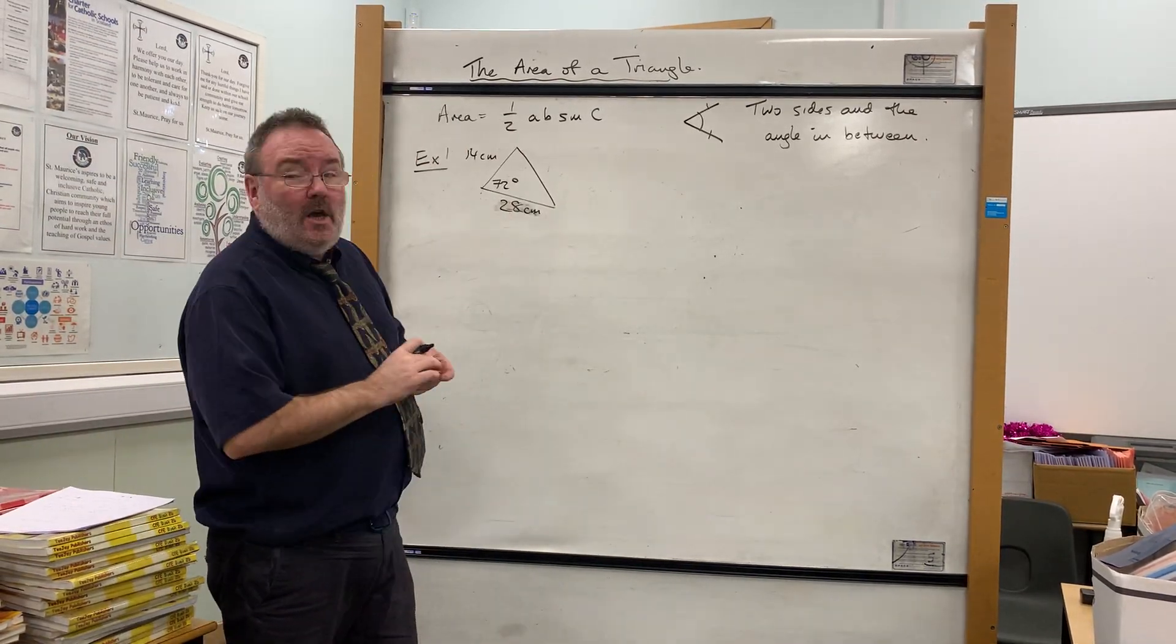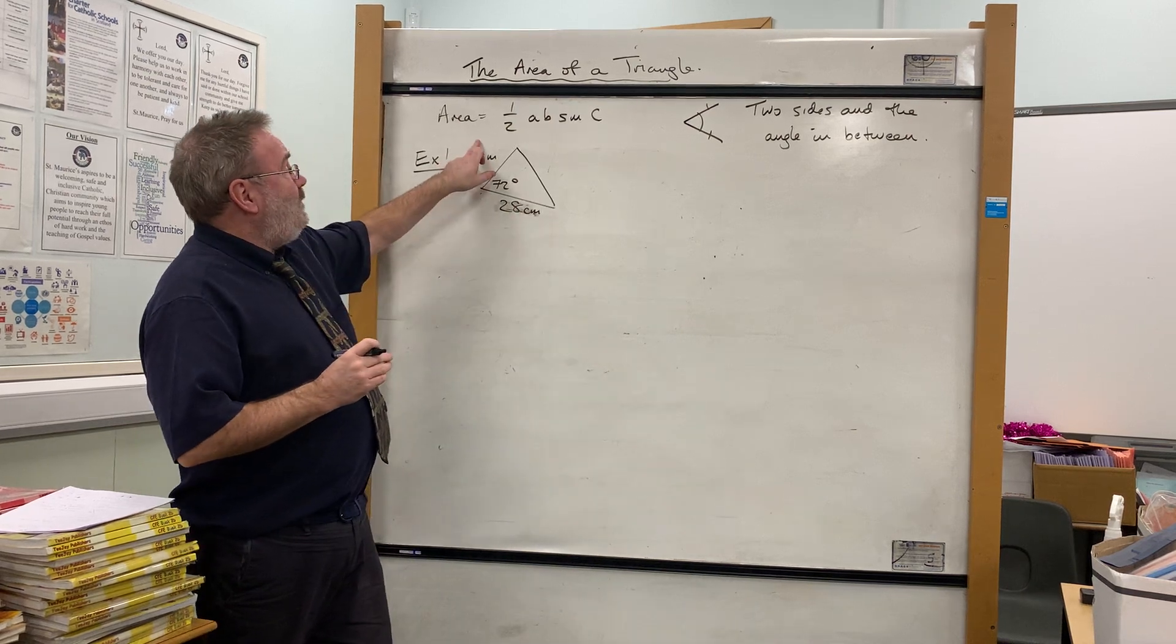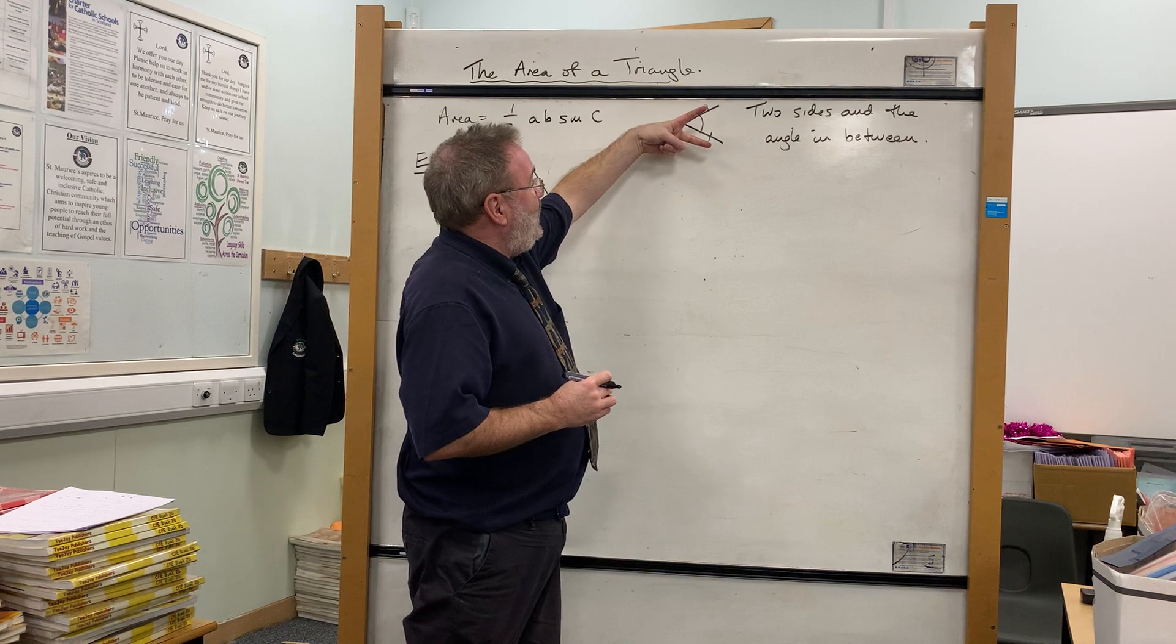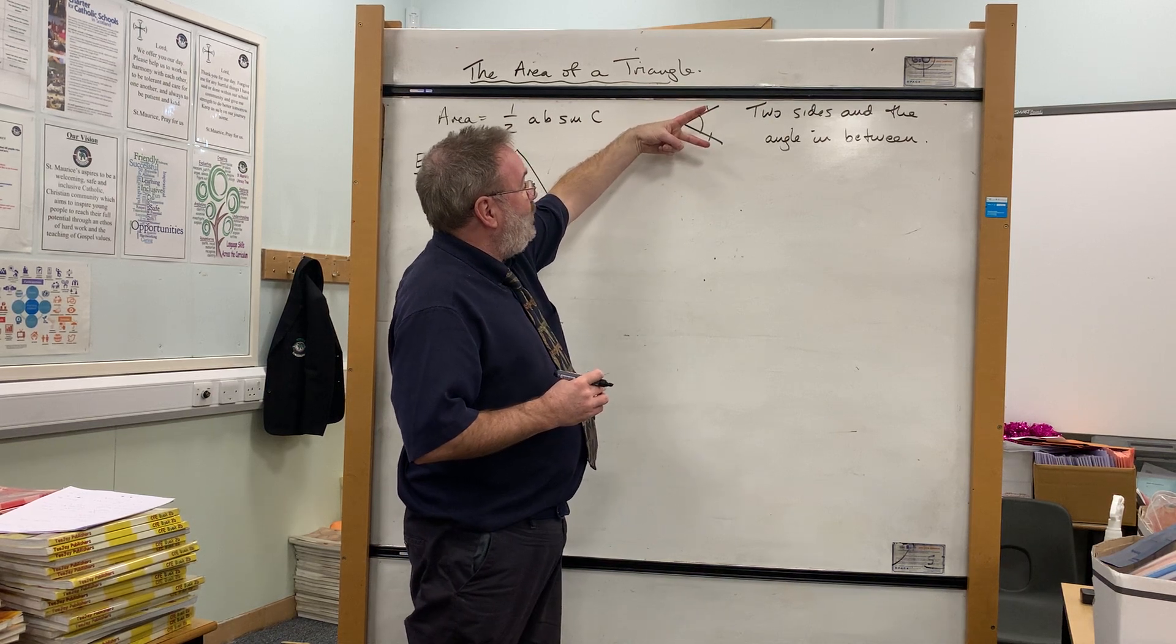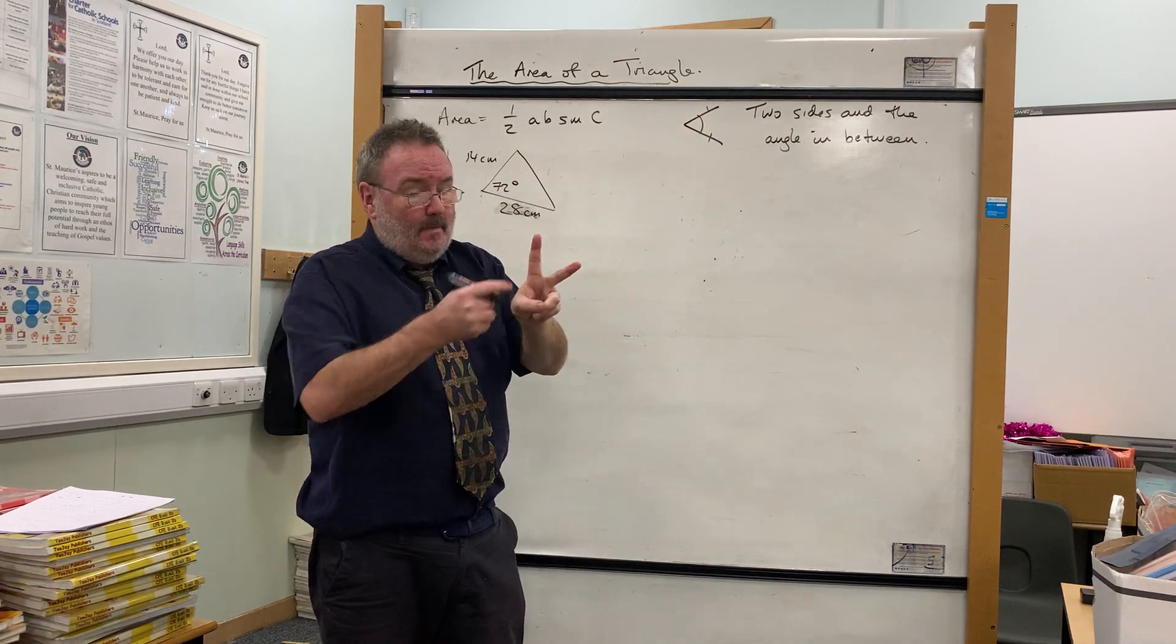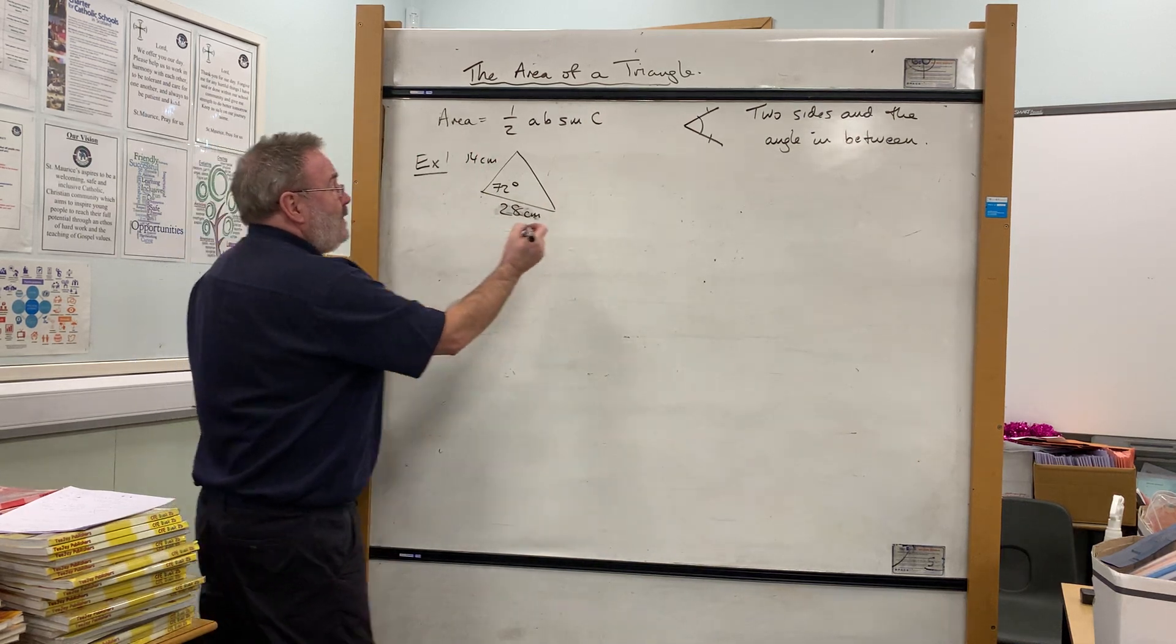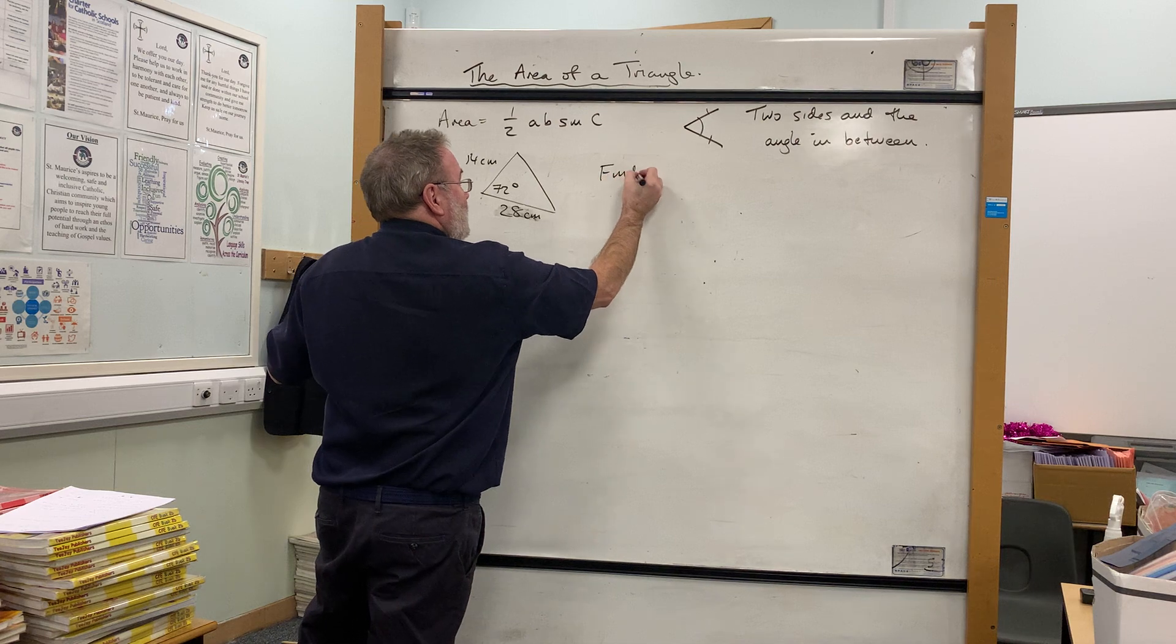Okay guys, the area of a triangle - there's your formula: area equals a half ab sin C. Now as you'll remember, that's how we use the area triangle formula. Two fingers, right? The two fingers and the angle in between, the two sides and the angle in between.